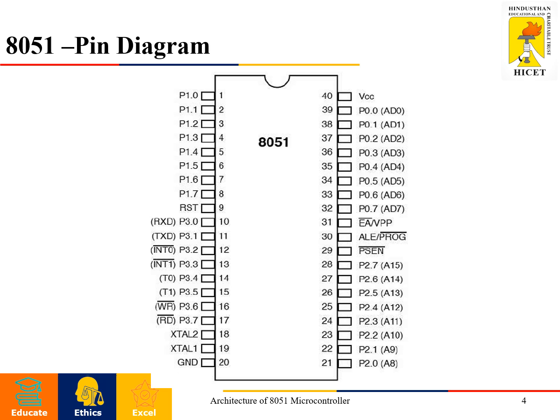Pin numbers 1 to 8 support Port 1. Port 1 normally supports I/O communication. Pin numbers 28 to 21 are meant for Port 2. Along with Port 2, multiplexed address lines are available. The 8051 has a 16-bit address line — the lower bits are available on pin numbers 32 to 39, and the higher order address bits are available on pin numbers 21 to 28.